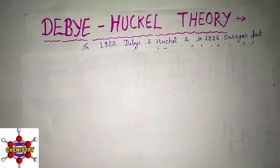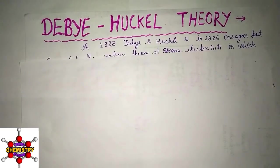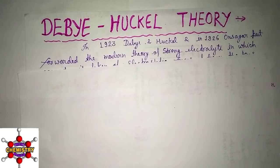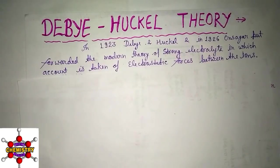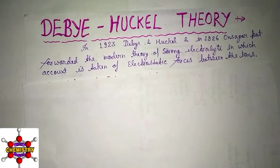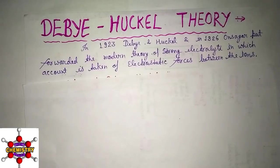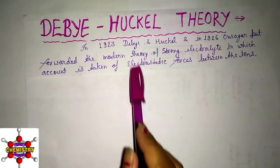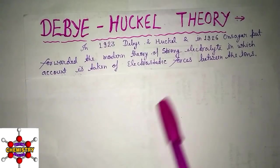In 1923, Debye and Hückel, and in 1926, Onsager put forward the modern theory of strong electrolytes, in which account is taken of electrostatic forces between ions — that is, between cations and anions — which is called the electrostatic force of attraction, making it the main basis of the theory.